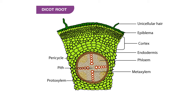After epiblema, the next layer from outside to inside is cortex. Immediately after cortex, the endodermis layer is the innermost, where the Casparian strip is arranged — meaning cells are thickened by suberin material. Next to endodermis is the pericycle layer. After pericycle, the arrangement of vascular tissue system — xylem and phloem — is present. In between the xylem and phloem cells, conjunctive tissue is there. Generally, two to four xylem and phloem patches are present here.